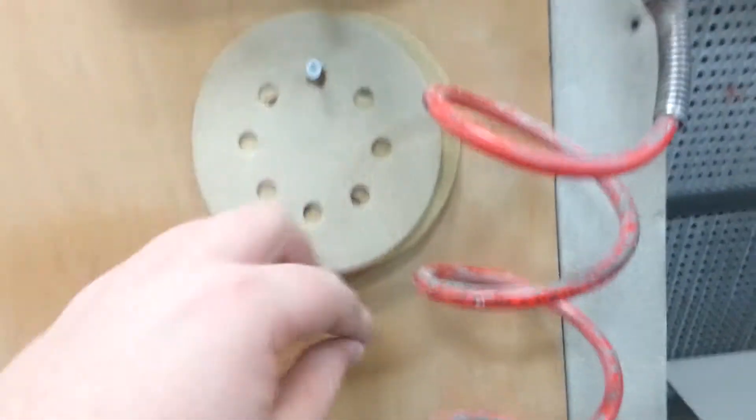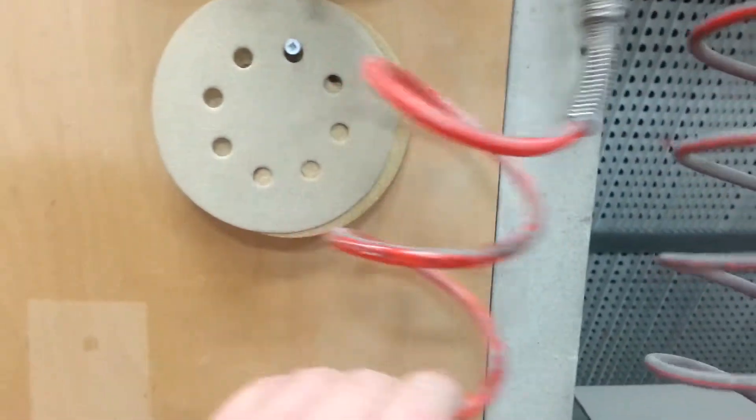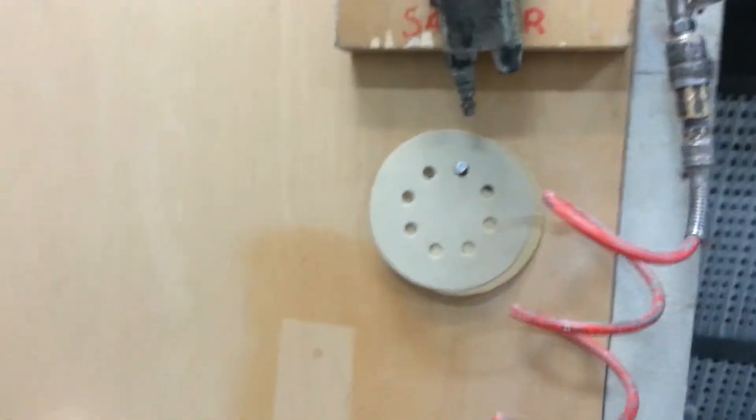The setback is they fall off the screw pretty easily, and with this air hose here, it occasionally knocks them off as well. So we're just going to do a quick tweak to make it better.